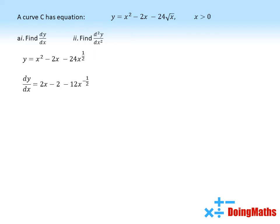So the x squared becomes 2x, our 2x, the x disappears to make 2, and our 24x to the power of a half. We multiply the 24 by the half, take 1 off the power, giving us a power of minus a half.